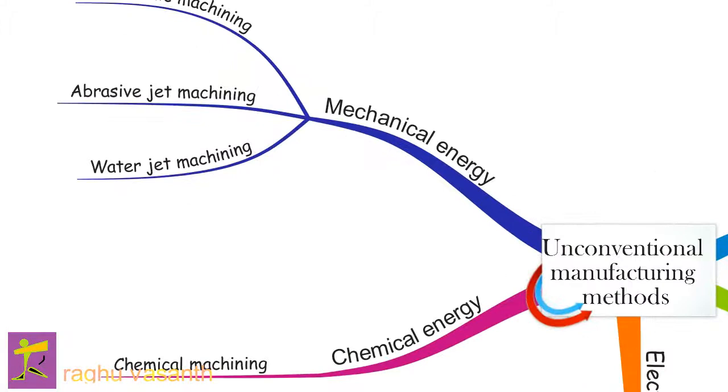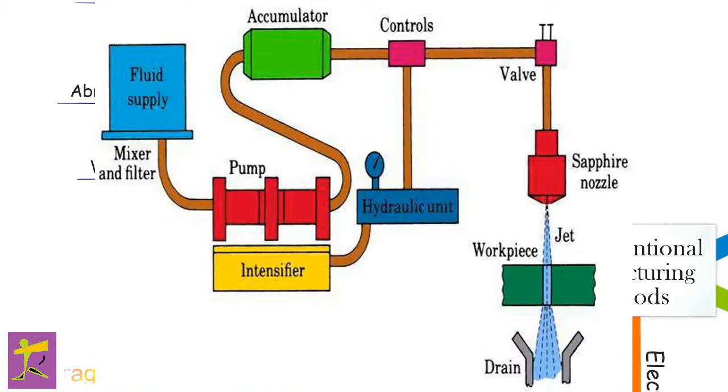A water jet cutter, also known as a water jet or waterjet, is an industrial tool capable of cutting a wide variety of materials using a very high-pressure jet of water, or a mixture of water and an abrasive substance. The term abrasive jet refers specifically to the use of a mixture of water and abrasive to cut hard materials such as metal or granite, while the terms pure water jet and water-only cutting refer to water jet cutting without the use of added abrasives, often used for softer materials such as wood or rubber.